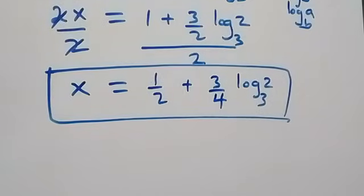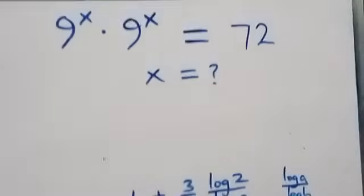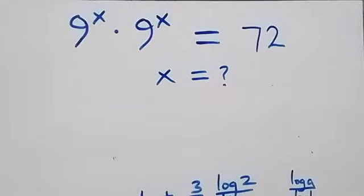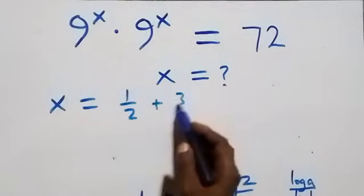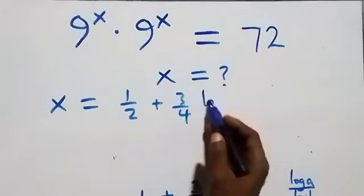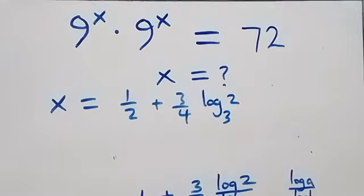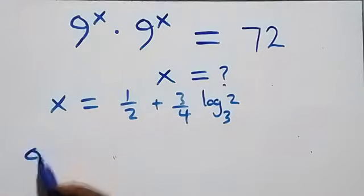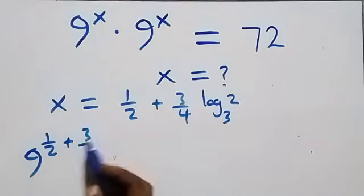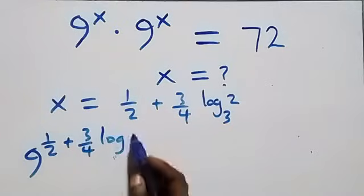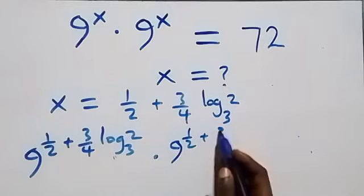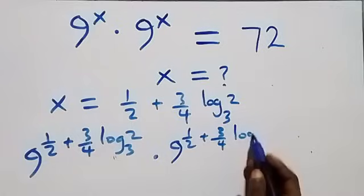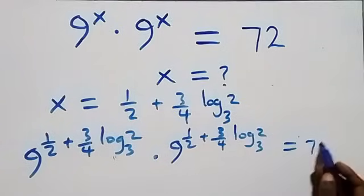Now let's check if this satisfies the original equation. We substitute x equals 1/2 plus (3/4)·log₃2 back in. We get 9 raised to power (1/2 + 3/4·log₃2) times 9 raised to power (1/2 + 3/4·log₃2) equals 72.